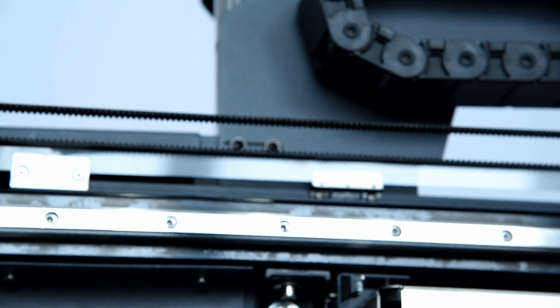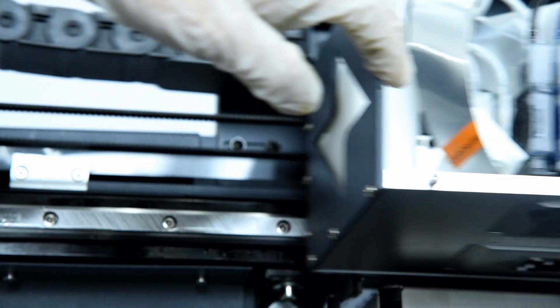First, we power off the machine and pull the carriage to the left side.